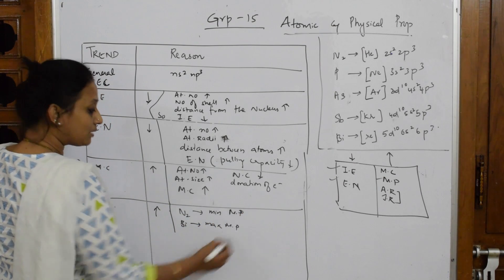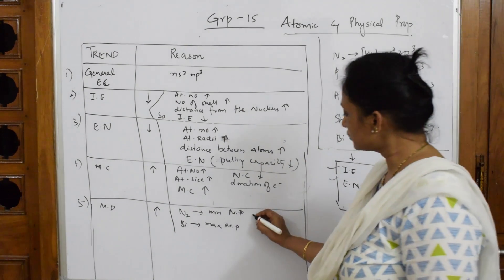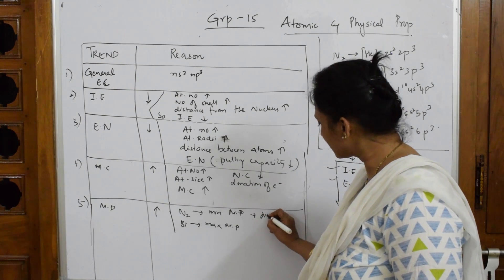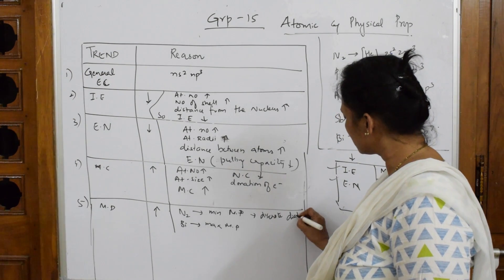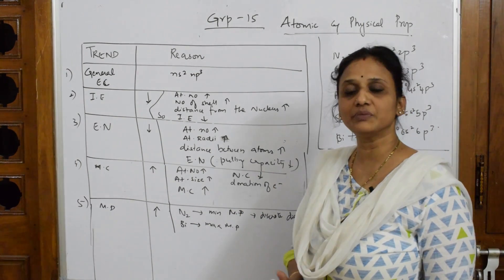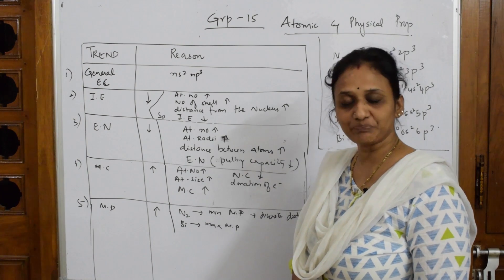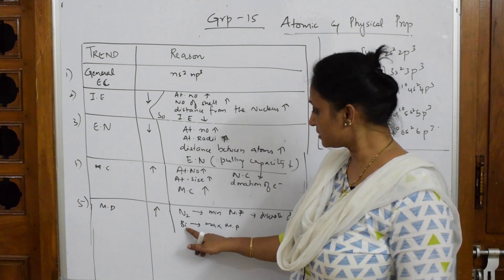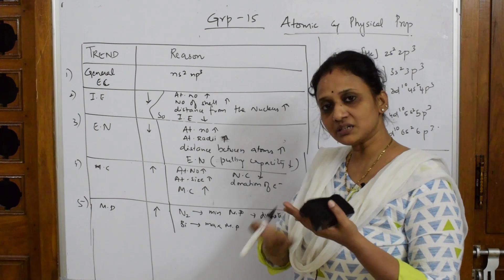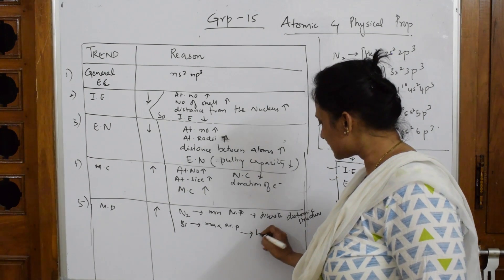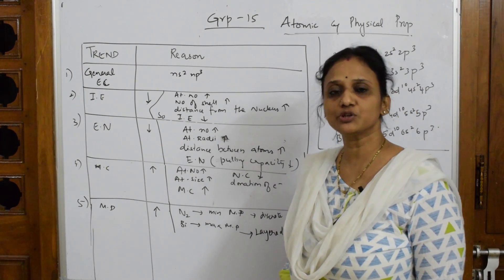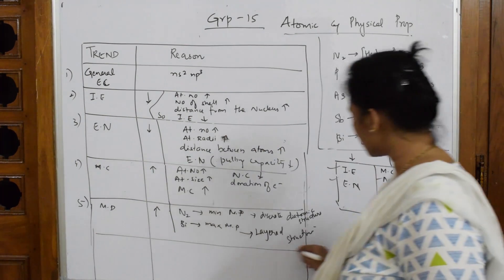The reason: nitrogen is a smaller atom and is diatomic in nature — it has a discrete diatomic structure — so we need minimum energy to melt it, giving it minimum melting point. Bismuth, on the other hand, has a layered structure because its size is very large, with many layers present one after another. To break that layered structure, more melting point energy is required — hence bismuth has a higher melting point.